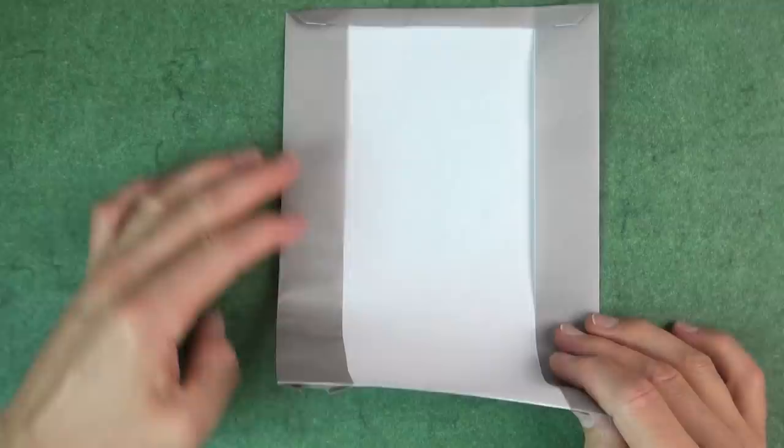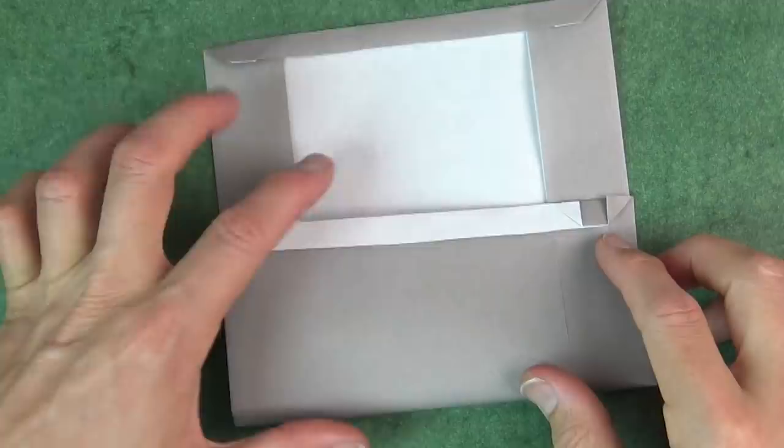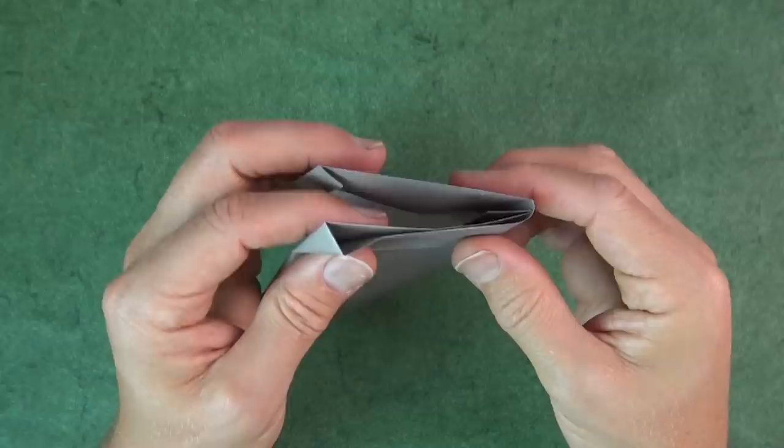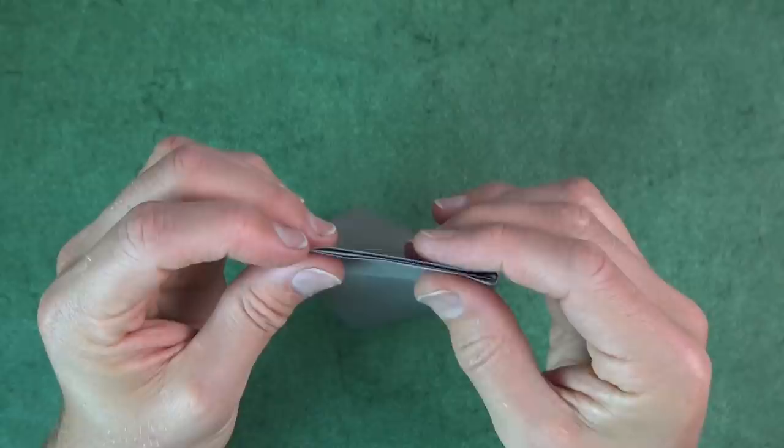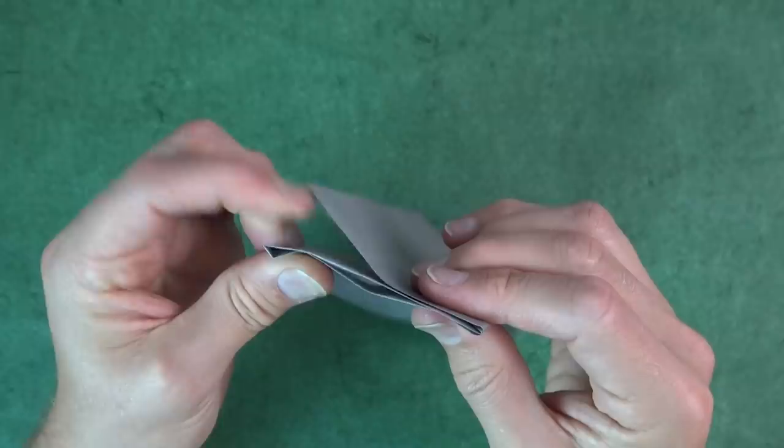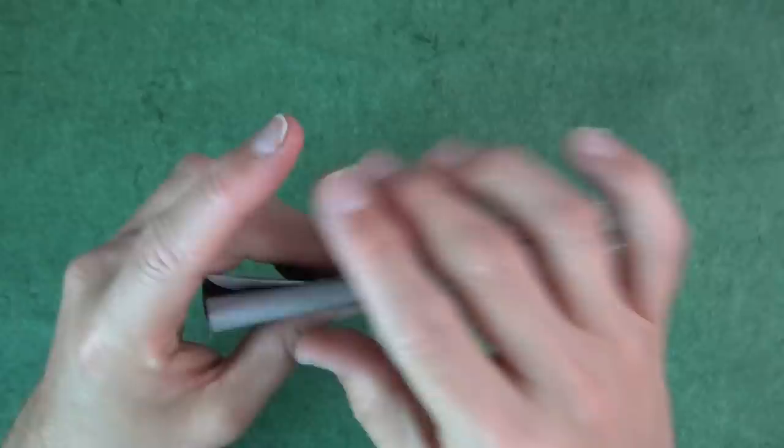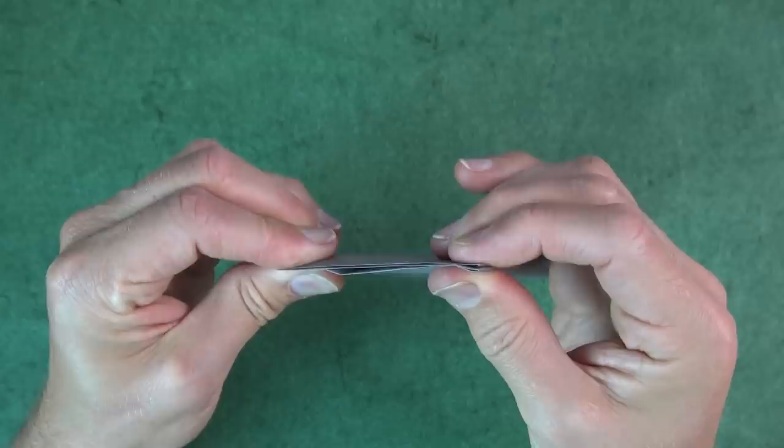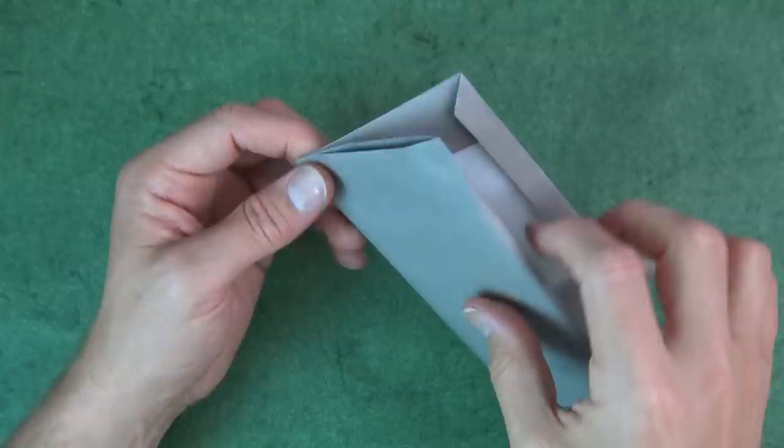And now we're going to fold in thirds. So estimate that this is equal to this. And you can fold this over. And now just align these edges so that the thirds are exact. Just fiddle with the folds. And do the same on this side. And now make the folds nice and sharp.